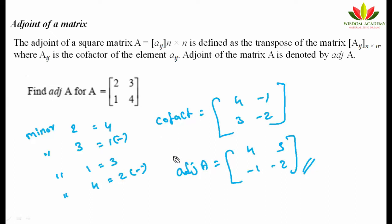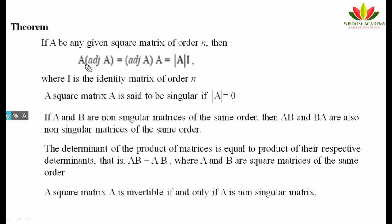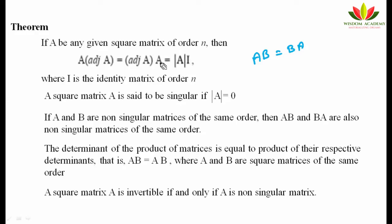An important theorem states: A × adj(A) = adj(A) × A = |A| × I. Although matrix multiplication is generally not commutative (AB ≠ BA), in the case of A and adj(A) the order does not matter — both products give the same result equal to the determinant of A times the identity matrix. Remember this theorem as questions may ask you to prove it.